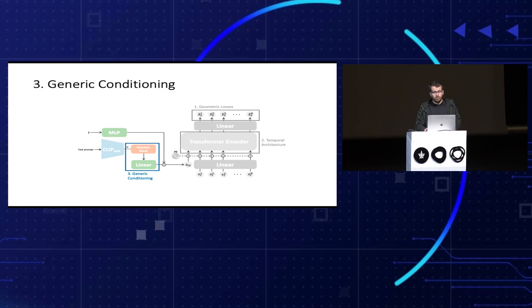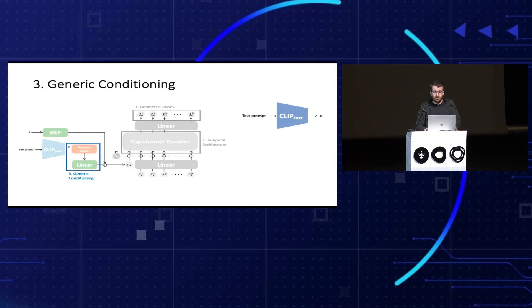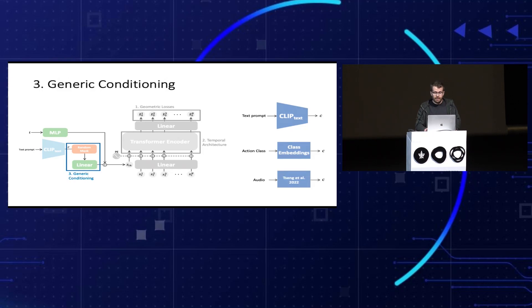For generic conditioning, we consider a generic condition encoded as input C to MDM, and this changes depending on the application. For text to motion, we use a fixed CLIP encoder to encode the text. For action to motion, we use class embeddings. And as our colleagues recently showed, they can attach a fixed audio encoder to MDM and implement music to dancing motion.